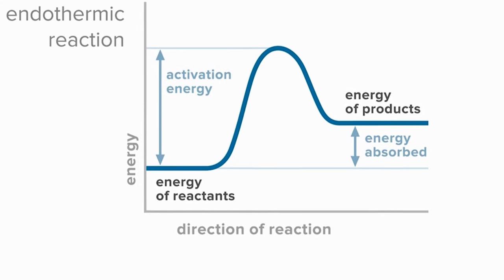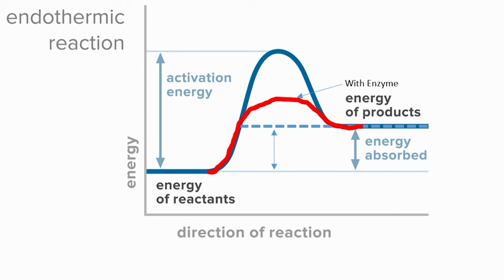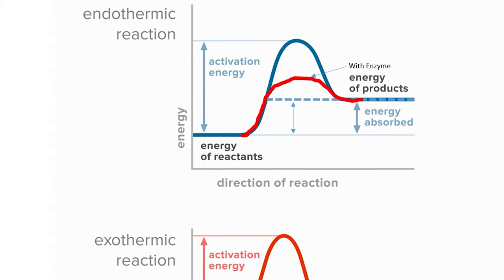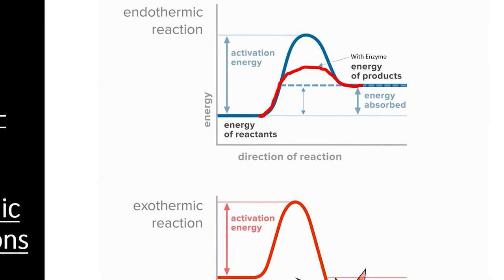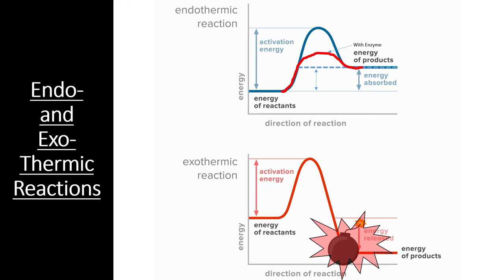Students sometimes confuse activation energy with the overall energy change in a reaction. If the products of a reaction are at a higher energy level than the reactants, you may be tempted to add both the activation energy and the difference between products and reactants to find the overall energy change. But the overall energy change is only the difference between the reactants and products. The activation energy can easily be lowered by using an enzyme, and the overall change in energy will remain the same. This is important because it shows that enzymes are not doing much more than bringing the chemicals together, putting them in the right position, and stressing the formation or breakdown of the right bonds. This gives enzymes the ability to completely reset after every reaction, allowing one enzyme to process hundreds of thousands of reaction cycles.